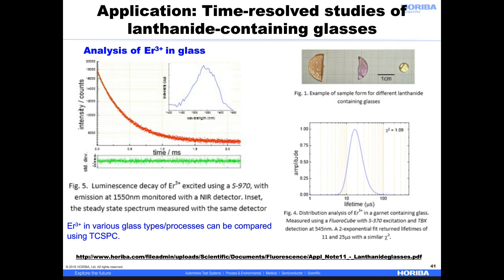The composition of lanthanides in glass materials can be studied using time-resolved phosphorescence decays. Here is data from a study of erbium content in different glasses using this method. The lifetime of erbium can vary with different types of glass and processes used to make the glass.